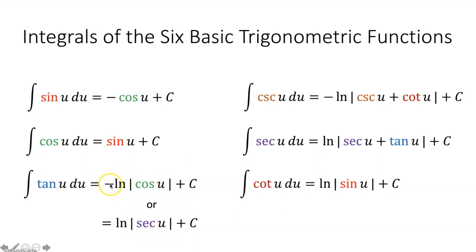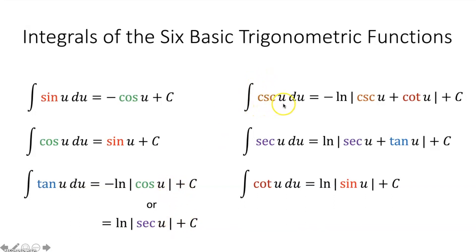Because using properties of logs, a number multiplied out front of a log can become the exponent of what we're taking the log of. So negative natural log of |cos u| equals natural log of |cos u|^(−1), which equals natural log of |1/cos u|, which is natural log of |sec u| plus c. We also know: the integral of cosecant of u du equals negative natural log of |csc u + cot u| plus c; the integral of secant of u du equals natural log of |sec u + tan u| plus c; and the integral of cotangent of u du equals natural log of |sin u| plus c.